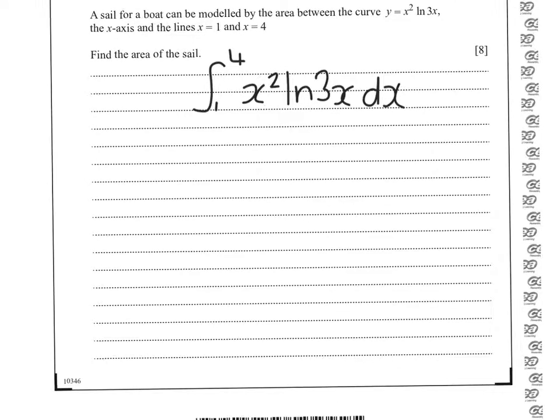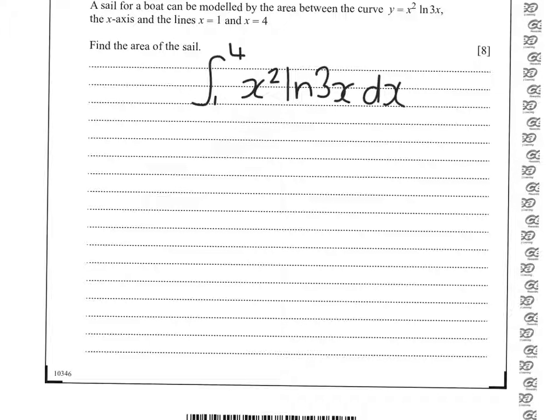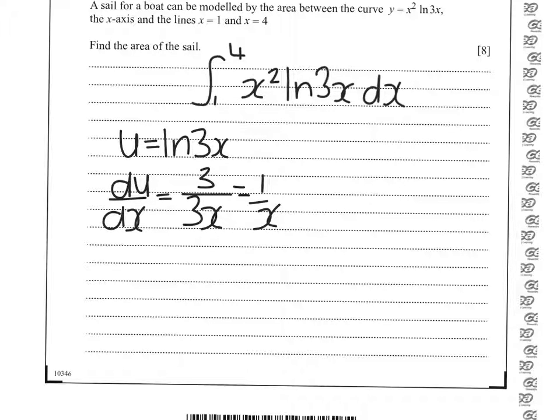This is an integration by parts, where u equals ln 3x, which means du dx equals the differential of 3x divided by 3x, which gives us 1 over x. And dv dx equals x squared, which means v is 1 third x cubed.